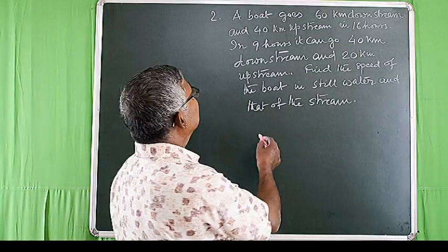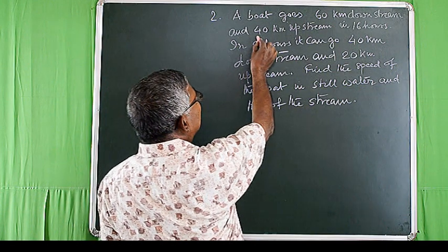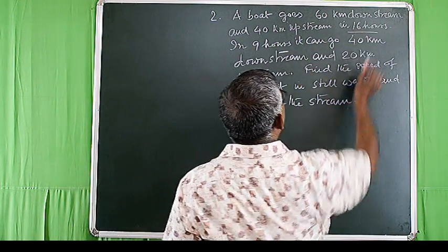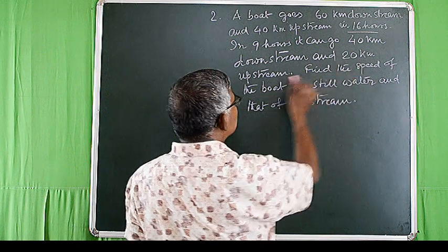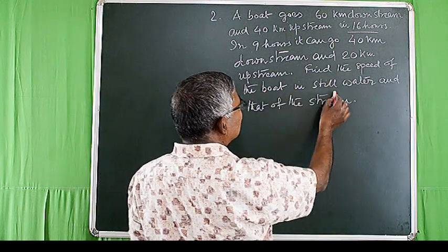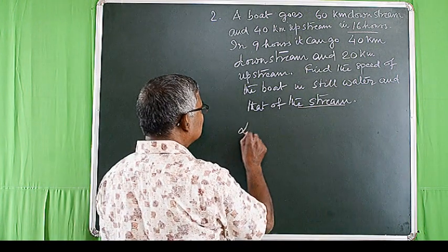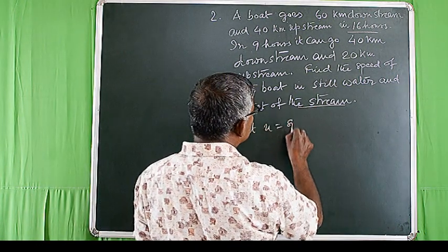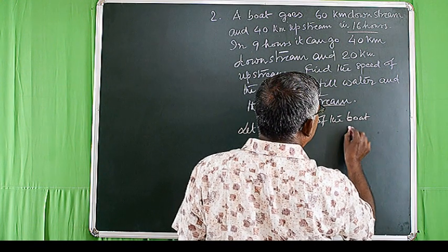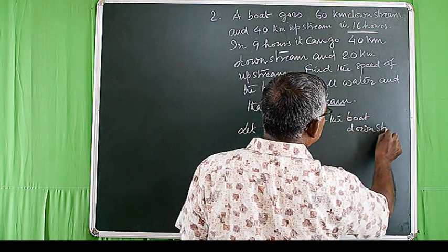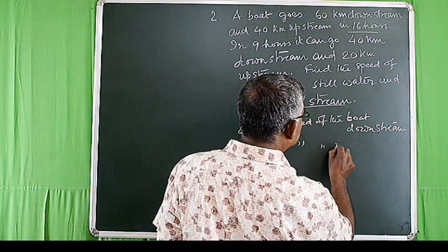Let us consider the second problem. A boat goes 60 km downstream and 40 km upstream in 16 hours. In 9 hours it can go 40 km downstream and 20 km upstream. Find the speed of the boat in still water and that of the stream. Let u = speed of the boat downstream and v = speed of the boat upstream.